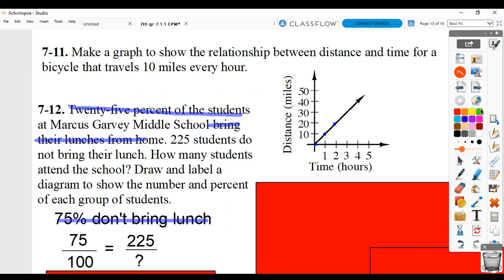You could solve this with a proportion using cross products. So 100 times 225, multiply those two diagonally. Then you're going to divide by the third value. In other words, divide by 75. What you get is that there's 300 students.